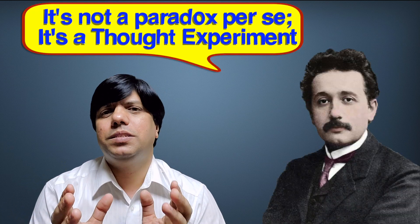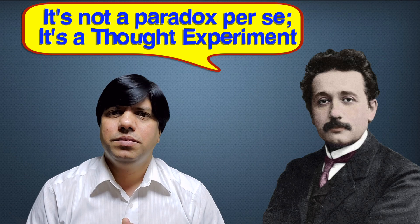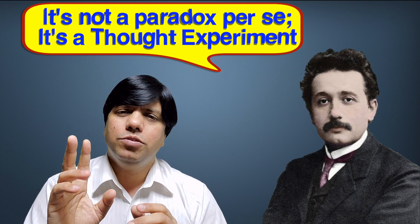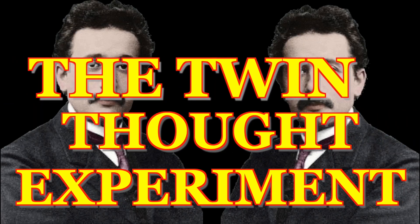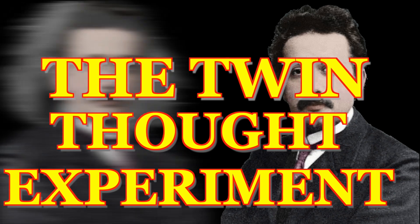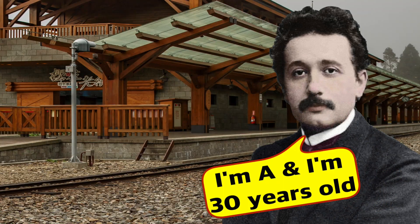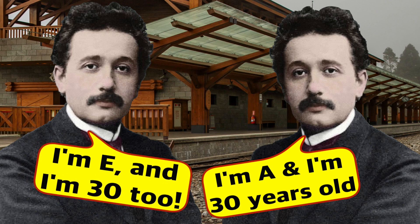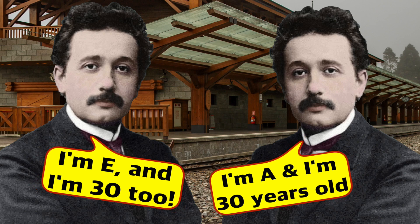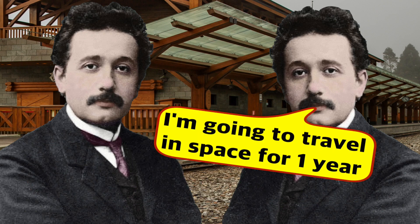Einstein explains this idea of different times at different places with this thought experiment. He says imagine there are two brothers who are twins. Both are 30 years old. Now one brother participates in an experiment. He says I will go and travel the space in a train that travels at the speed of light.